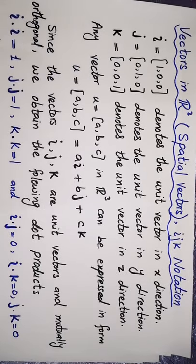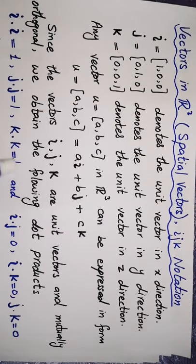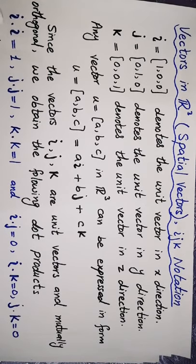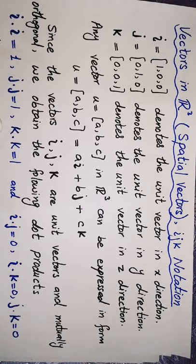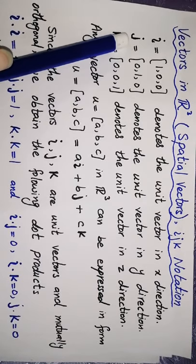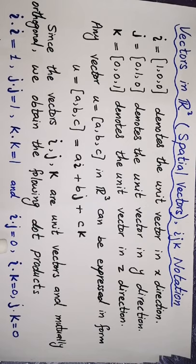Orthogonal means that their dot product is equal to 0. Because they are unit vectors, their dot product with themselves is always 1: i·i = 1, j·j = 1, and k·k = 1. But i and j are orthogonal to each other, meaning i·j = 0, j·k = 0, and i·k = 0.